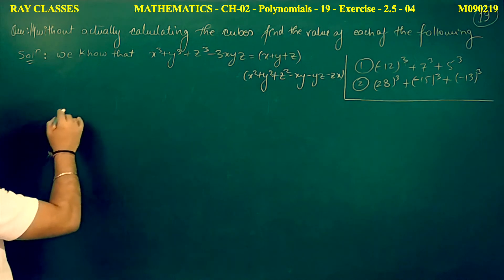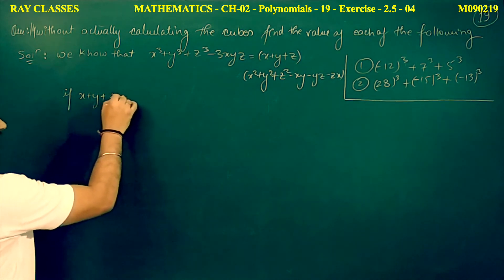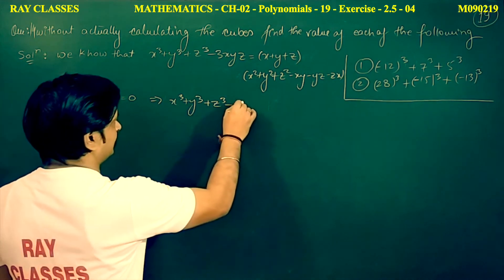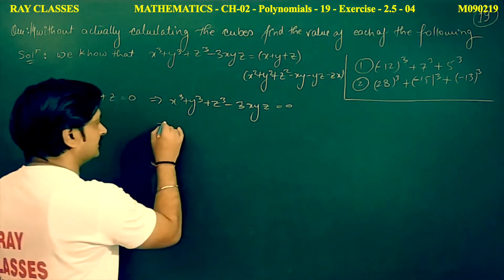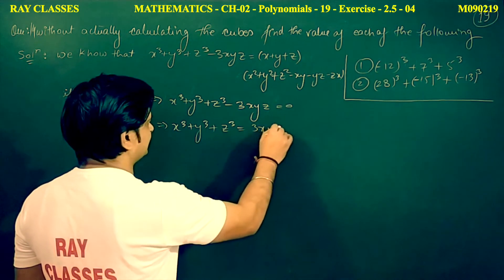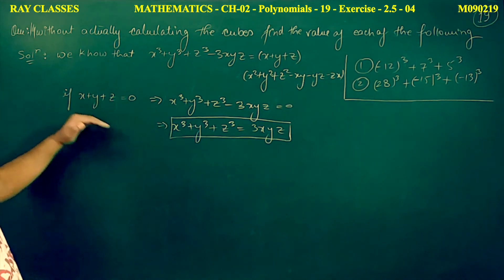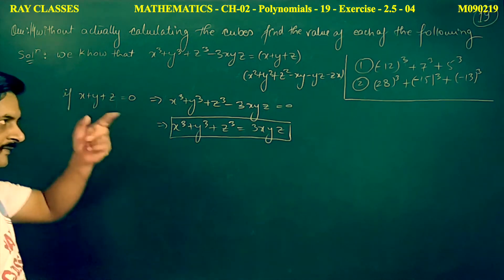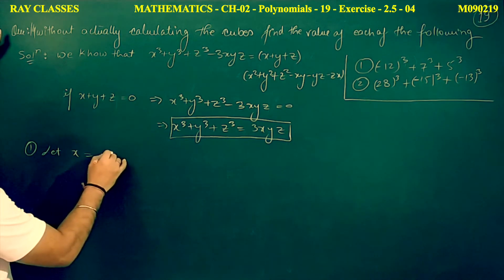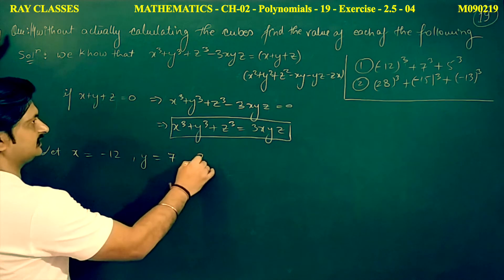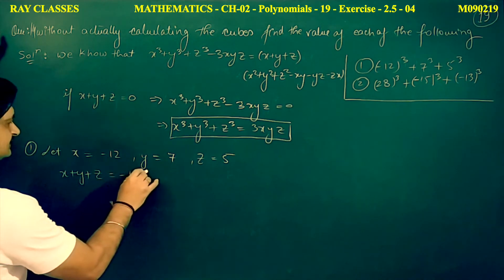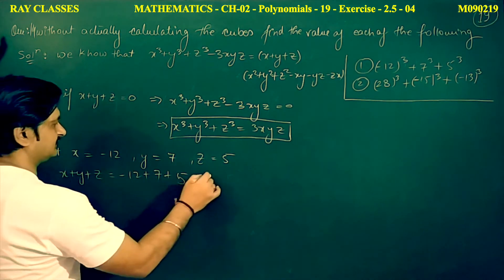We have already proven that if x plus y plus z equals 0, then x cubed plus y cubed plus z cubed equals 3xyz. For the first part: x equals minus 12, y equals 7, and z equals 5. So x plus y plus z equals minus 12 plus 7 plus 5 equals 0.